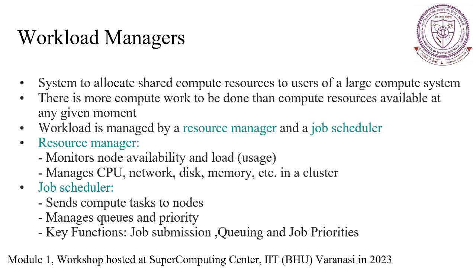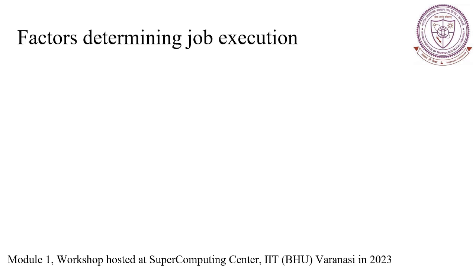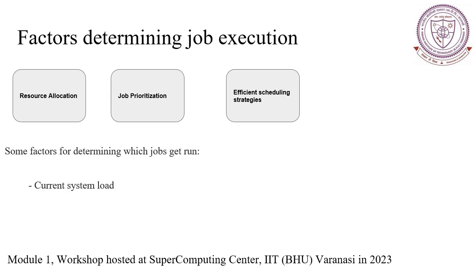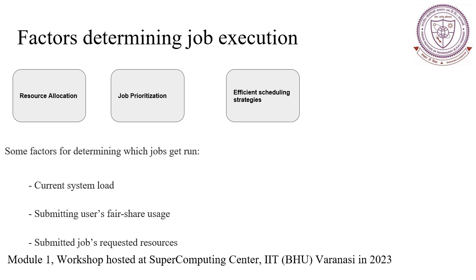The job scheduler works closely with the resource manager to schedule and manage the execution of tasks or jobs on available computing resources. Its main purpose is to efficiently allocate resources based on job priorities, dependencies and other criteria. Primary functions include job submission, queuing and job prioritization. The workload manager receives job submissions from users along with their resource requirements, priorities and other specifications. It maintains a queue of pending jobs and schedules them for execution based on predefined policies.